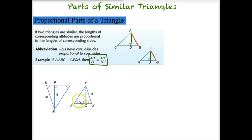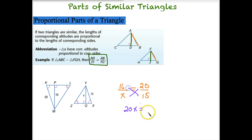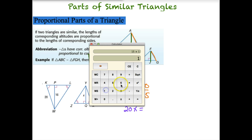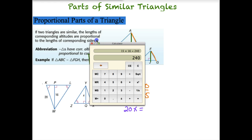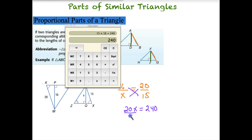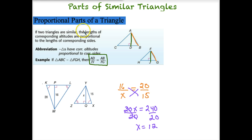Let's solve for the altitude. We can take 16 from the big triangle over X from the small triangle, and set that equal to 20 from the big triangle over 15 from the small triangle. Cross multiplying, 20X equals 15 times 16, which gives us 240. Dividing by 20, X equals 12. So the altitude YQ in the small triangle is equal to 12, since our triangles are similar.